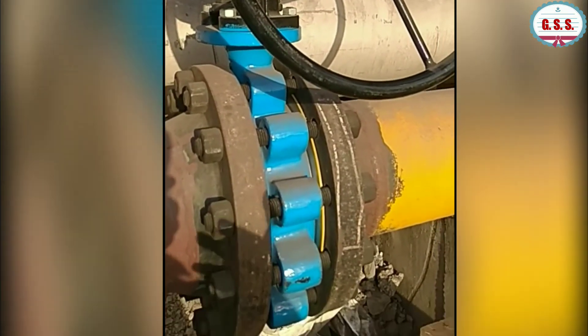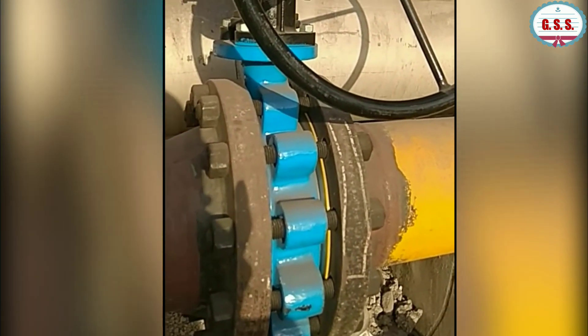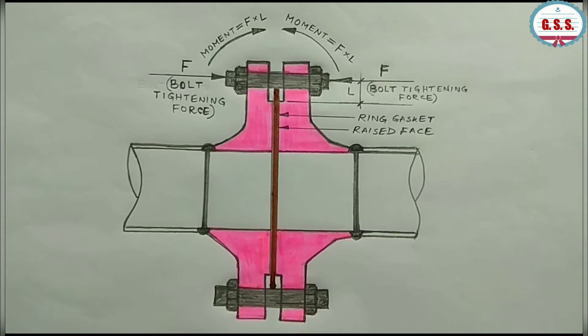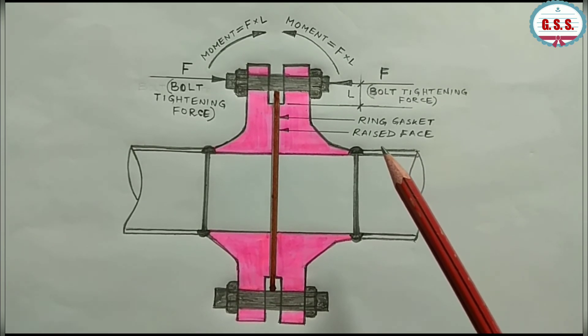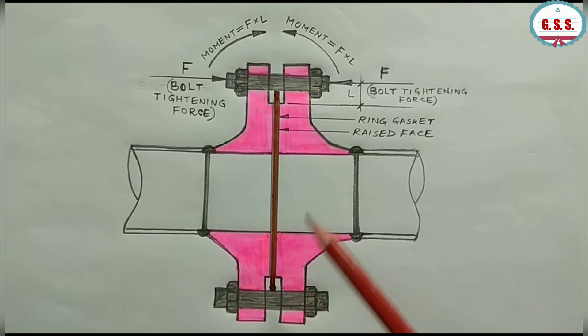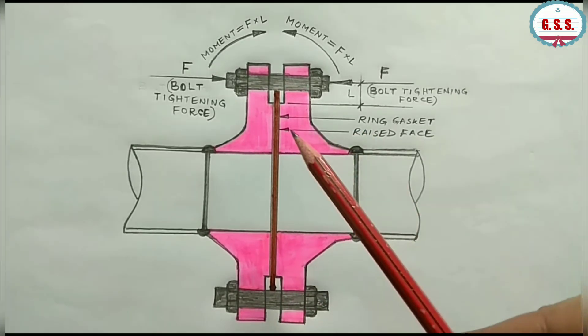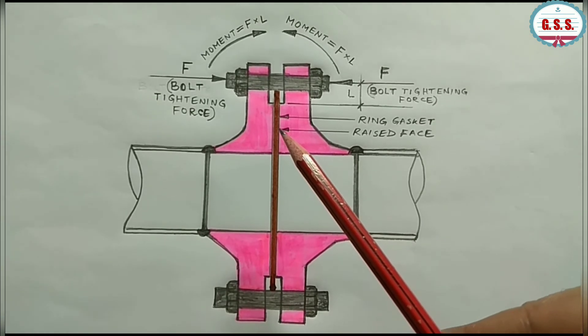You can see an installation of a valve where a raised face flange has been used with a ring gasket. Raised face flange is most commonly used, and this is the bolting arrangement for a raised face flange where a ring gasket or spiral wound gasket sits over the raised face and touches the bolt's inner surface.